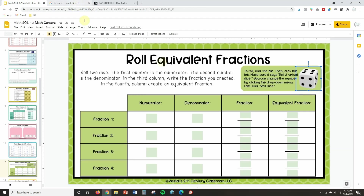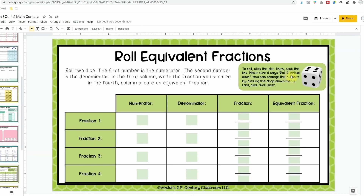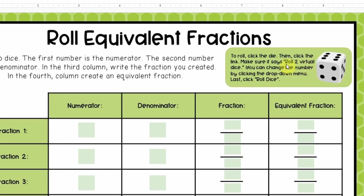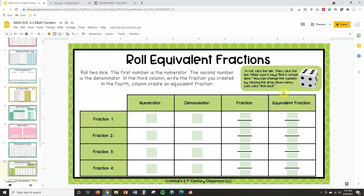Students will just go back and forth between the two tabs, which I don't find to be a big deal. The one thing I do recommend is providing very specific directions on the slide about what to do when they get to the site — for example, telling them how to change the settings to roll two dice. That is how you embed the die directly onto your Google Slides.